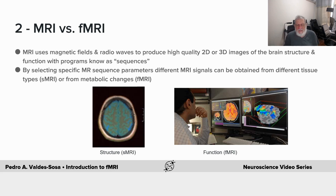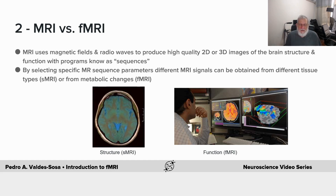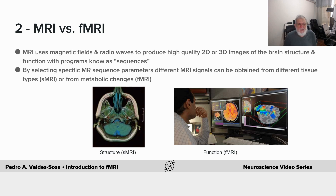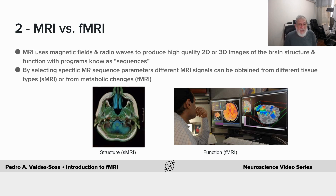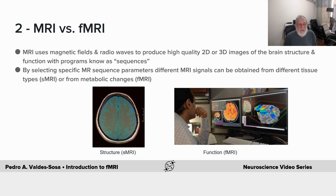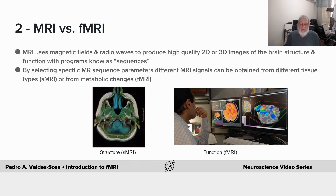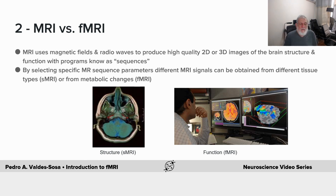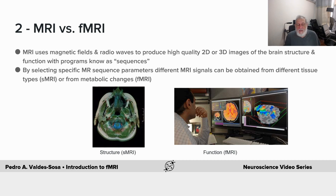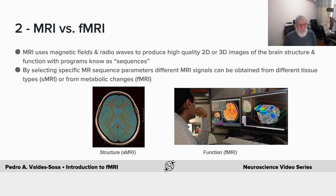Due to the complexity and interplay between the magnet, the gradients, and radio frequency, one can change the arrangement of emitting the gradients and then receiving the radio frequency response of the protons as they return to their original position. These are known as MRI sequences.